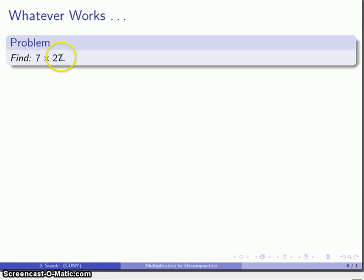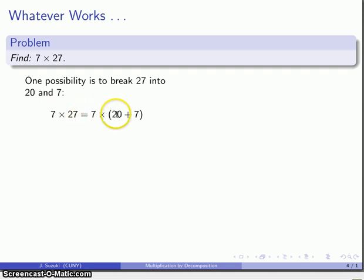Let's consider the product 7 times 27. One possibility is we could break 27 into 20 and 7. So I can apply the distributive property: 7 times 27, 7 times 20 plus 7. And I'll multiply that out: 7 by 20 and 7 plus 7. Again, I can do those multiplications much more easily. This is 7 times 20 is 140, 7 times 7 is 49, and add those two together to get the product 189.